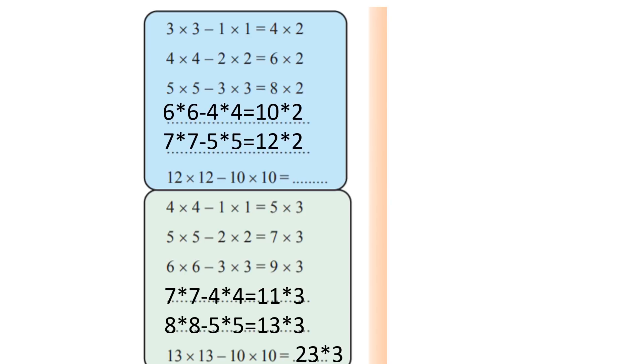Now for the next problem: 3×3 minus 1×1 equals 4×2. 4×4 minus 2×2 equals 6×2. 5×5 minus 3×3 equals 8×2. 6×6 minus 4×4 equals 10×2. 7×7 minus 5×5 equals 12×2. 12×12 minus 10×10, you will do this last one.